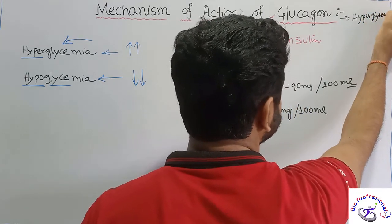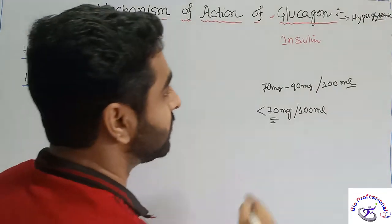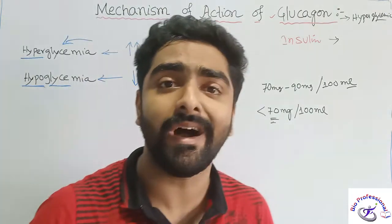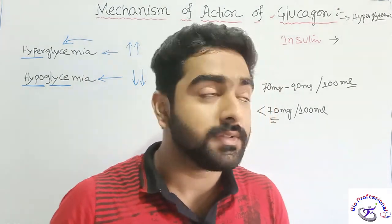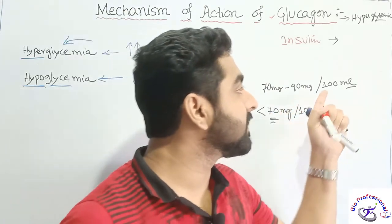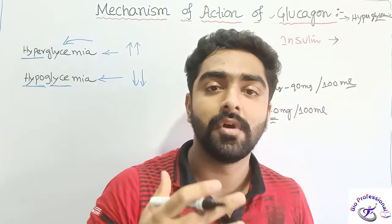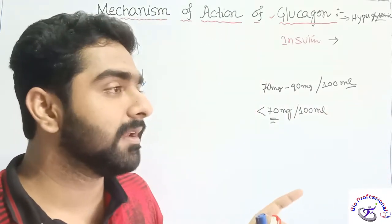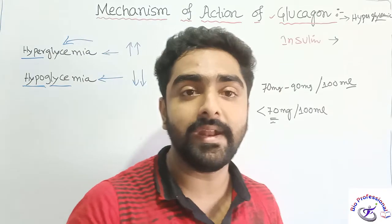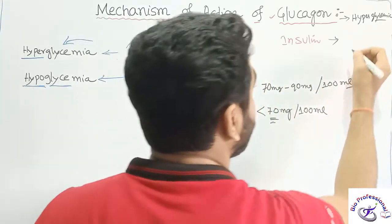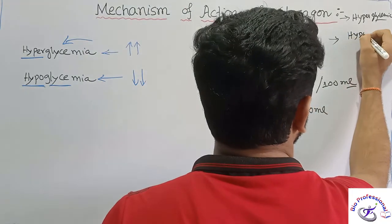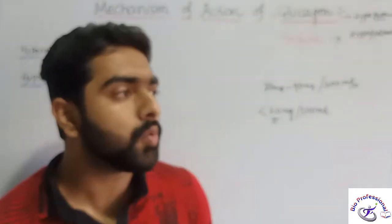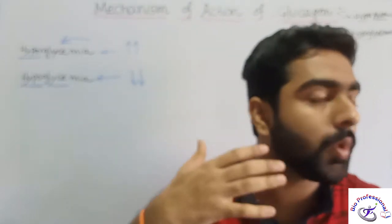Glucagon is called hyperglycemic because it allows the blood glucose level to increase. What about insulin? When the blood glucose level is very high — say 130 or 140 mg per ml — then insulin comes into play and minimizes the blood glucose level. So insulin is basically hypoglycemic.